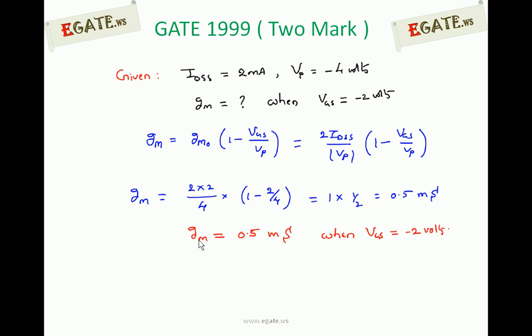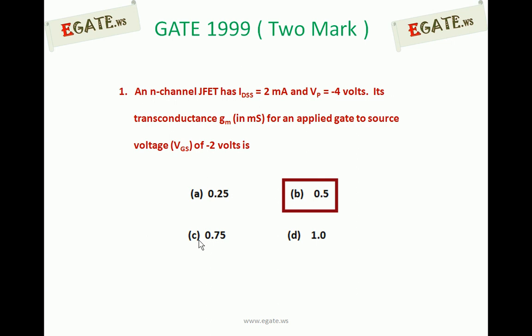So transconductance of n-channel JFET is 0.5 millisiemens when VGS is minus 2 volts. The right option is B, 0.5 millisiemens. Thank you.